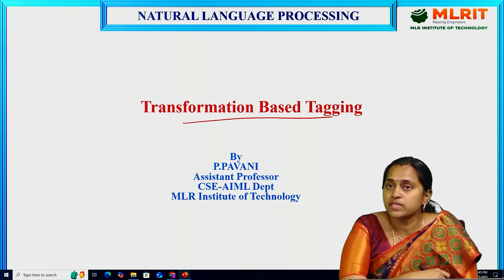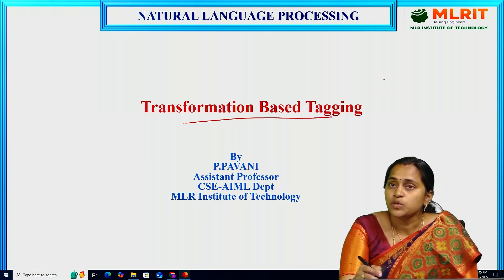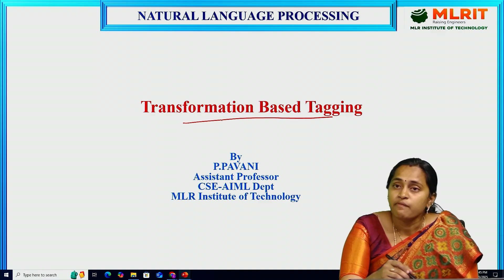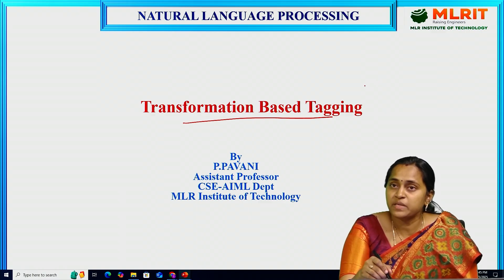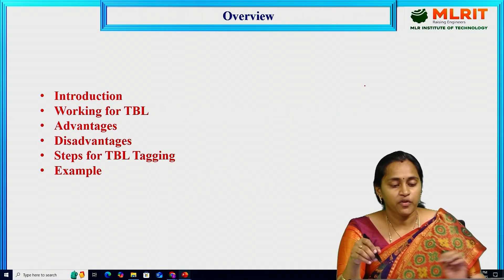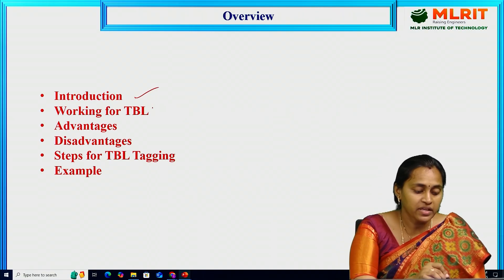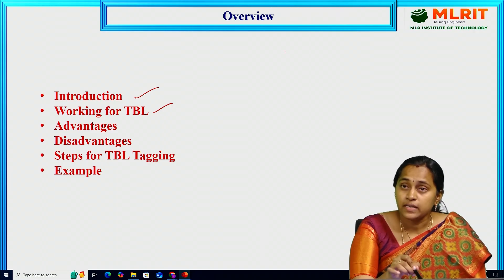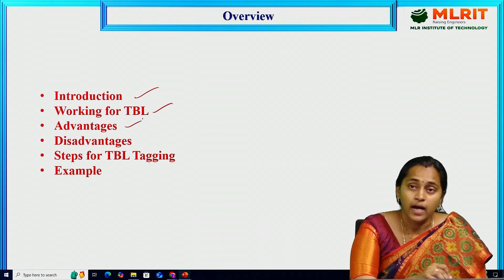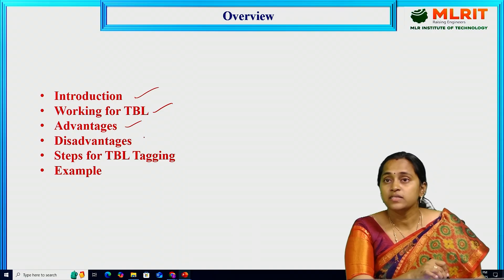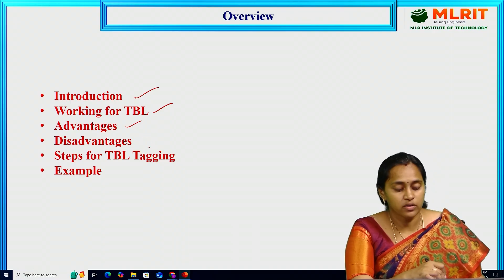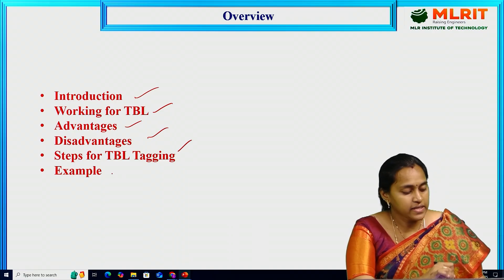In the previous video, we discussed POS tagging — under POS tagging, there are different types: rule-based POS tagging, stochastic POS tagging, and finally transformation based POS tagging. The overview of today's session covers introduction and working of TBL — that means transformation based learning — and advantages, disadvantages, steps to follow for TBL tagging, and an example.